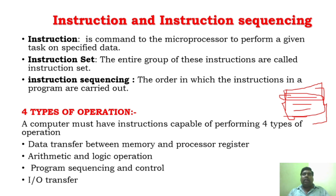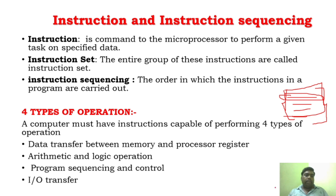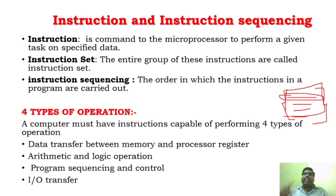For any particular computer, four types of basic operations are needed. Whenever the processor performs all the operations, but it needs any information or data or operand, it will collect it from the memory. The four important operations are: data transfer between memory and processor register, arithmetic and logical operation, program sequencing and control, and I/O transfer — that is input-output transfer. We have already seen all these things in Unit 1, but remember these four very important operations needed for any computer.